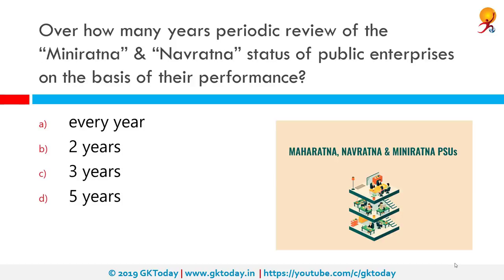Over how many years is a periodic review of Miniratna and Navratna status of public enterprises performed based on their performance? The correct answer is every three years. As of 13 September 2017, there are 8 Maharatnas, 16 Navratnas, and 74 Miniratnas.